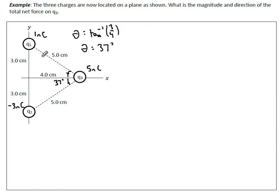Q1 will try to make Q3 go in this direction. So F1 on 3 is trying to push it down to the right at that angle theta that we found.